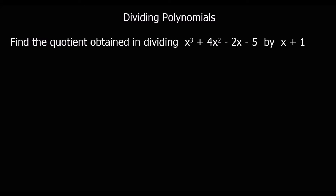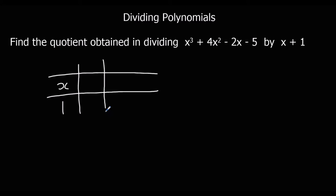In this video we're going to be dividing polynomials using the grid method. We're going to be looking at what multiplies by x+1 to give me the answer of x³+4x²-2x-5, and that will also tell me what I get when I divide x³+4x²-2x-5 by x+1. To do the grid method, we put x and +1 down the side, and the middle section should be the answer — these terms will add to give me the function.